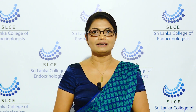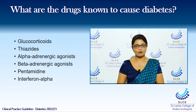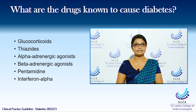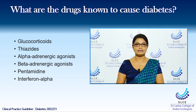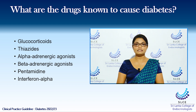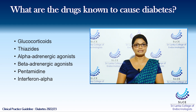Talking about the medications that can cause diabetes, glucocorticoids are the most common molecule that can cause diabetes. In addition, another commonly used molecule is thiazides. Apart from that, alpha-adrenergic agonists, beta-adrenergic agonists, pentamidine which is an antimicrobial agent, and interferon alpha are also known to cause diabetes in individuals.